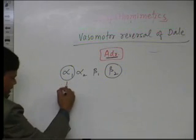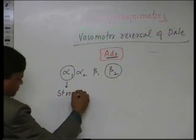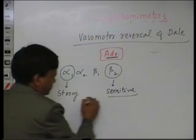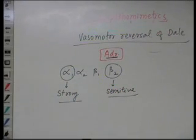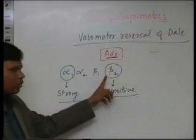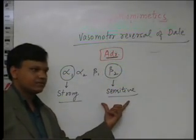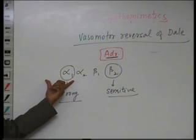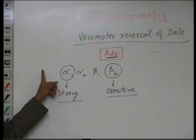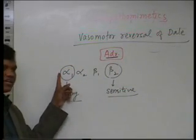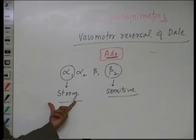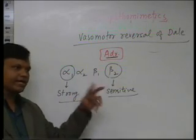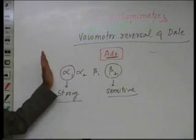Alpha1 receptors are strong receptors, whereas beta2 receptors are sensitive receptors. Even a low dose of adrenaline can stimulate beta2 because they are sensitive, but that low dose cannot stimulate alpha1. When a high dose is given, both are stimulated, but because alpha1 is strong, the effect will be mainly due to alpha1. So at low dose only beta2 is stimulated; at high dose both are stimulated but the effect is mainly due to alpha1.